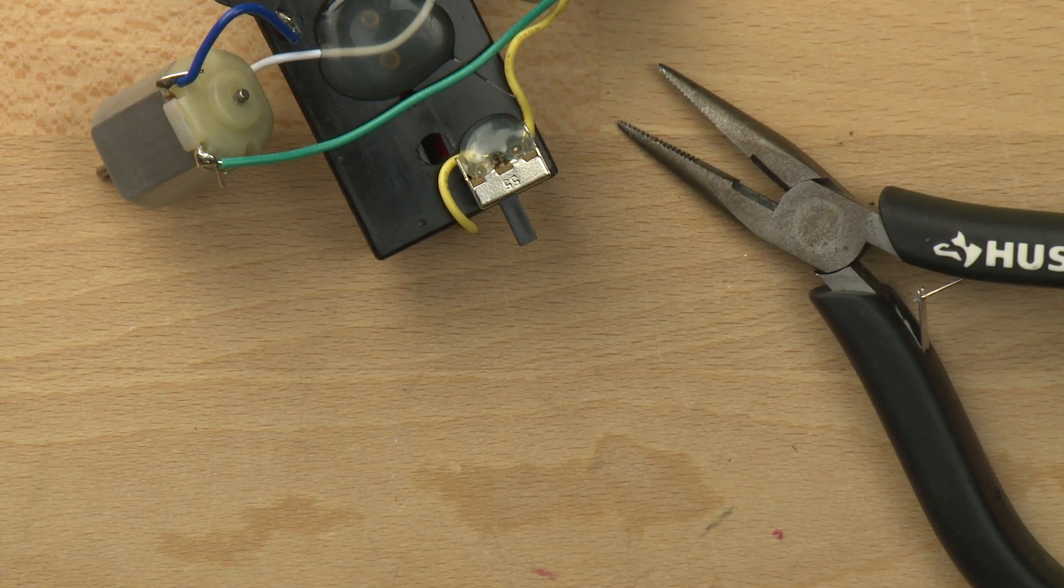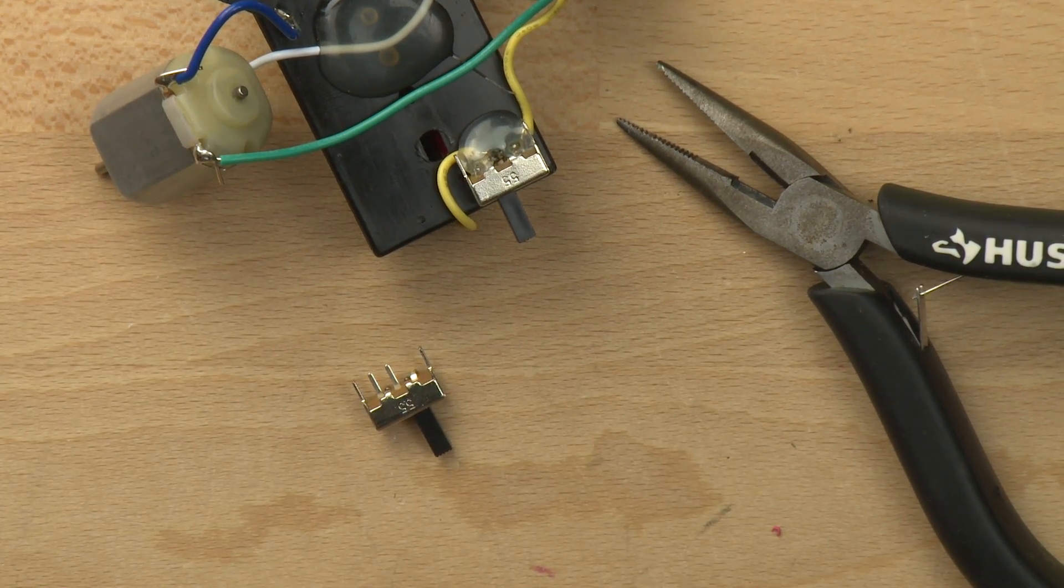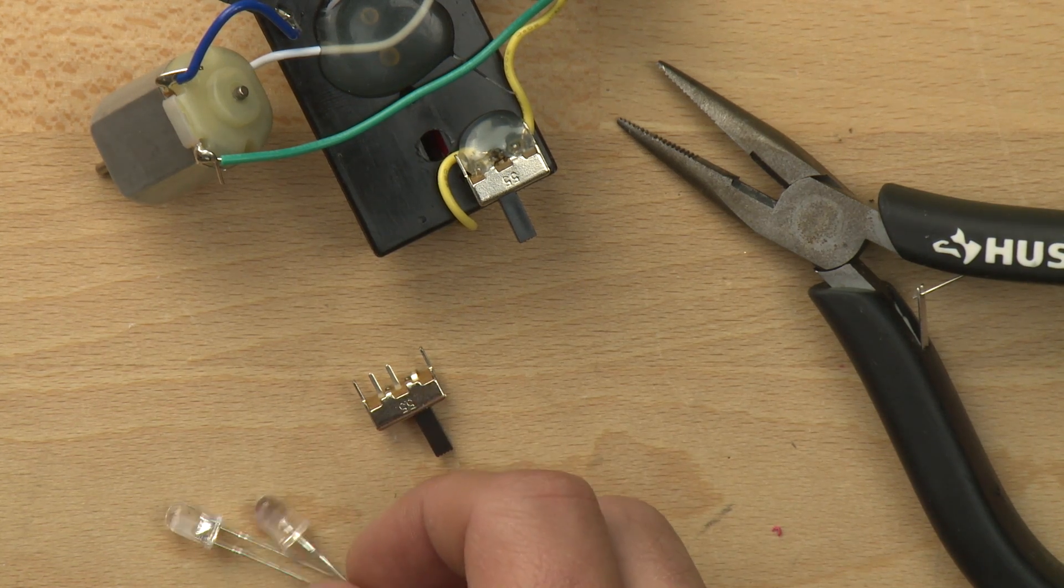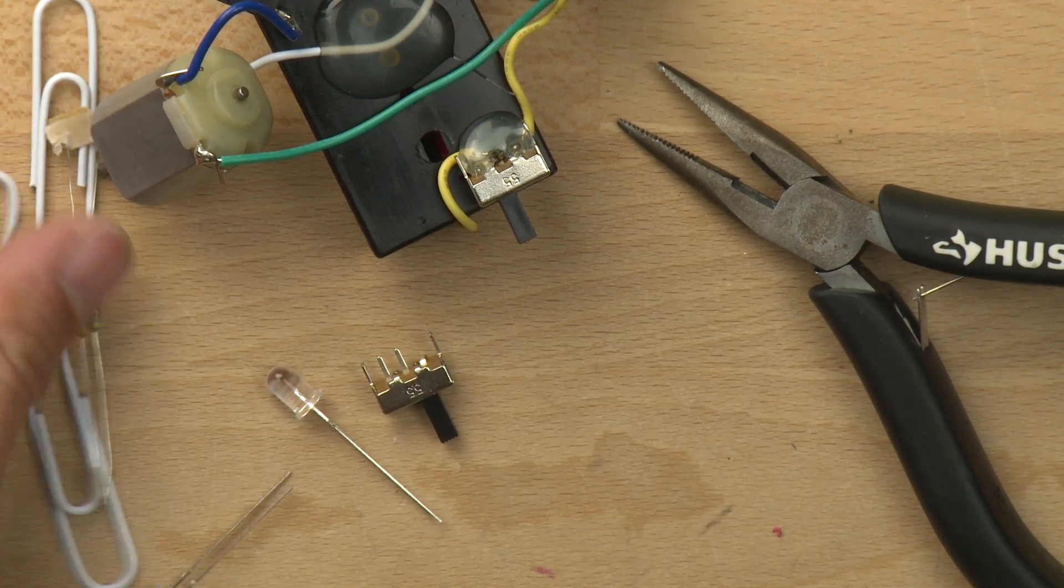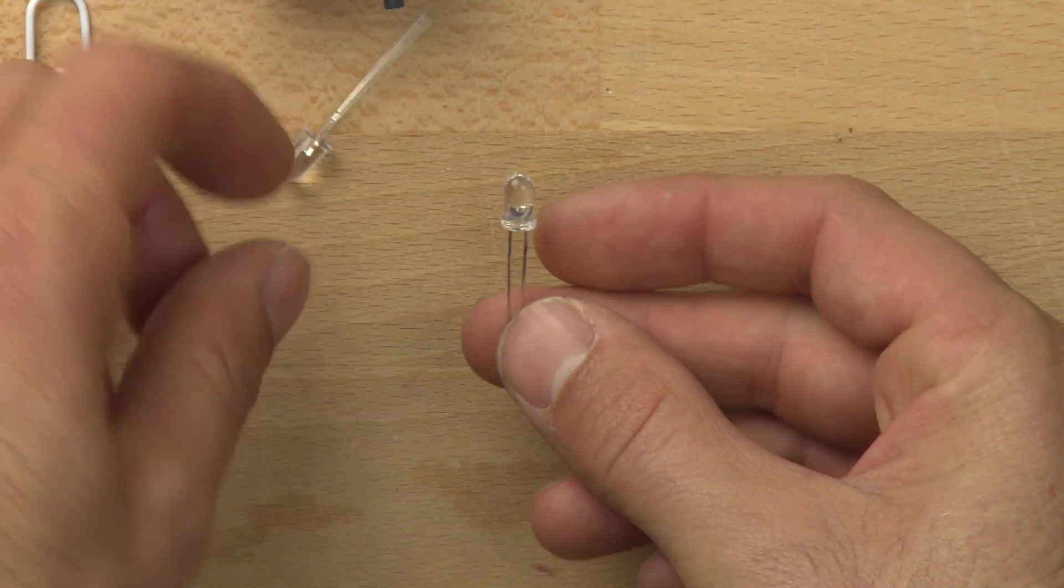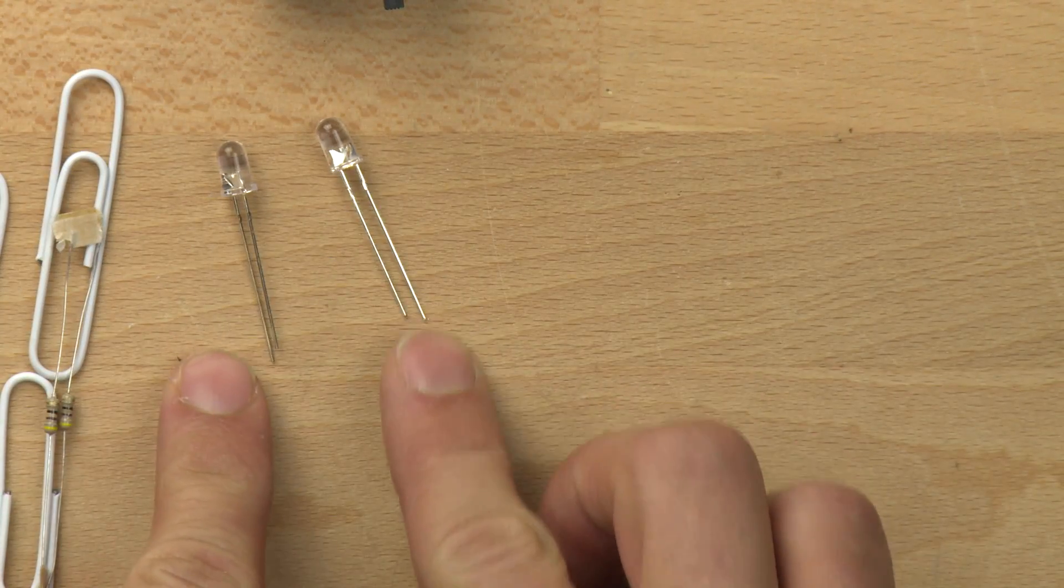We're going to take another switch and use that to turn on and off the LED eyeballs. So we'll put that together. Here are the LEDs. Let's go ahead and wire those up. We've got a long leg and a short leg. You can see on both LEDs.